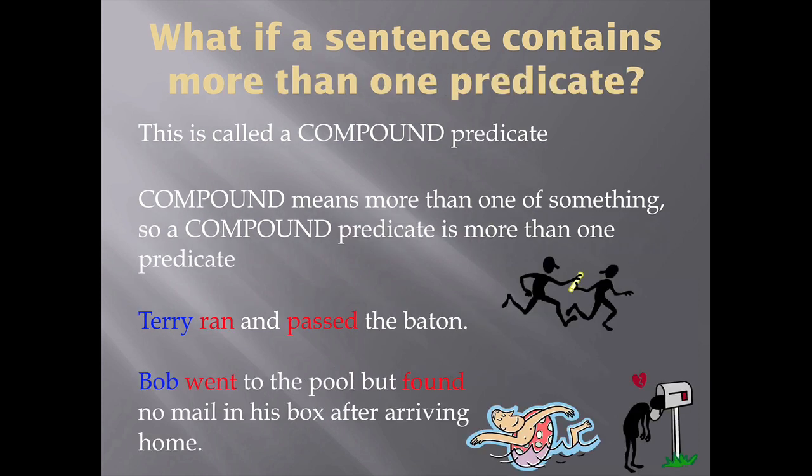You can also have a sentence that contains more than one predicate. That's called a compound predicate, because again the word compound means more than one of something, so a compound predicate means more than one predicate. Let's look at a couple of examples. Terry ran and passed the baton. You've got one subject, Terry, but Terry is doing more than one thing — running and passing. So that's a compound predicate.